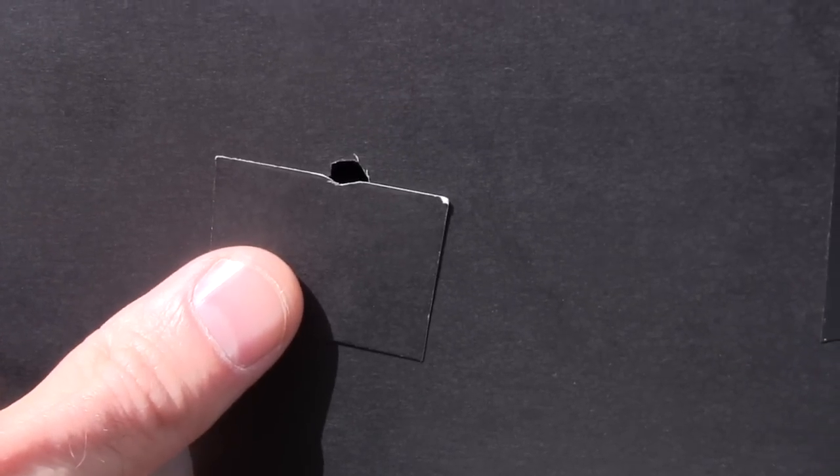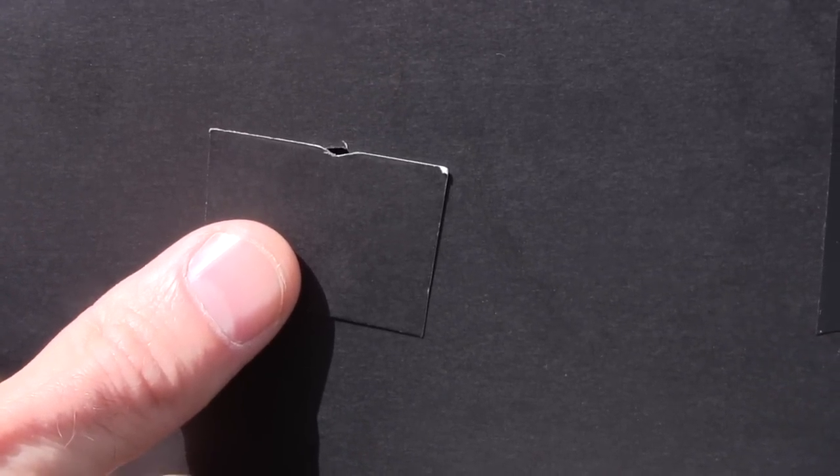You can make the focus adjustable by cutting a small notch in a piece of cardboard and slowly sliding it over the hole. As you do the image will become more focused but it will also become darker.